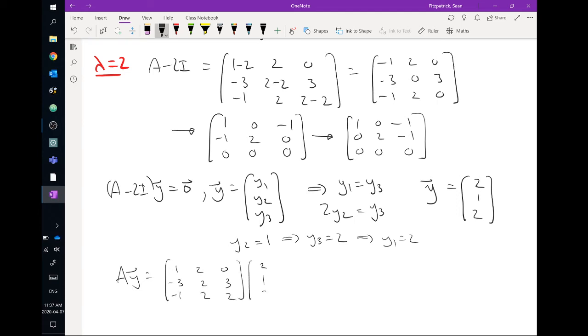So I get 2 plus 2, I get 4. I get minus 6, plus 6 plus 2, I get 2. I get minus 2, and then I get plus 2 plus 4. So I get 4, which is indeed 2 times 2, 1, 2. Okay, so I know that it worked. We could check the other one as well.